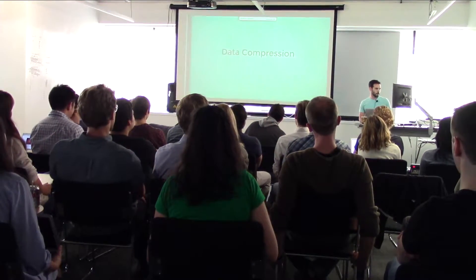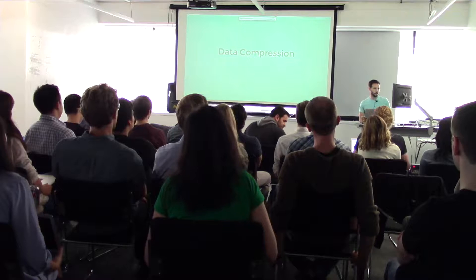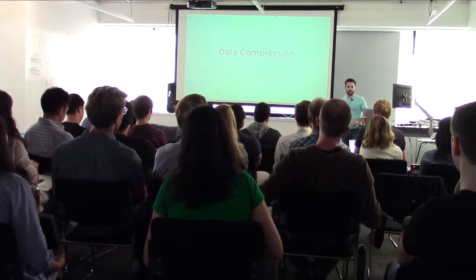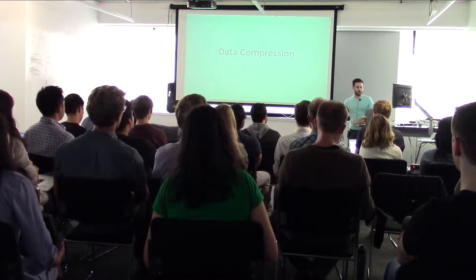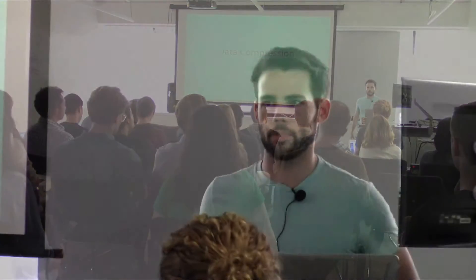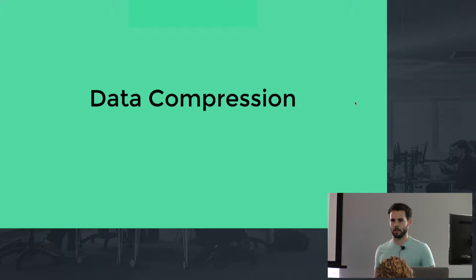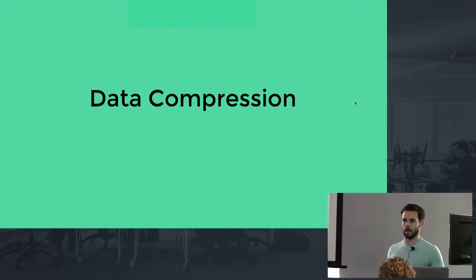I want to talk about data compression. I think it's something that we all kind of know about to a certain extent, but it's something that I feel like we didn't really touch on in this class and I think it's kind of cool. So I just want to give a high level overview of what it is, why it's important, a couple general algorithms for basic file compression, and then some more specific ones based on certain file types. I'm going to hopefully have time to talk about images and audio.